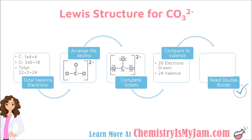The next step is to compare what you have drawn to your original number of valence electrons. Bonds count as 2, so counting this structure gives me 26 electrons, and there should only be 24, so we need to make a double bond. The double bond could go in any of the three locations; I'm going to put mine on the left-hand side. In order to make the double bond, I remove a pair of electrons from the carbon and a pair from the oxygen. My structure now has 24 electrons, which matches the 24 valence electrons that we started with. The correct structure for the carbonate ion will have a double bond.